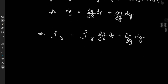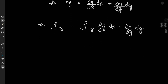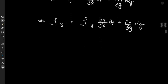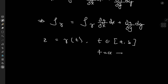We know how to parameterize contours: we write z = γ(t), where t lies between a and b, with t = a corresponding to the point a in the domain and t = b corresponding to the point b in the domain.